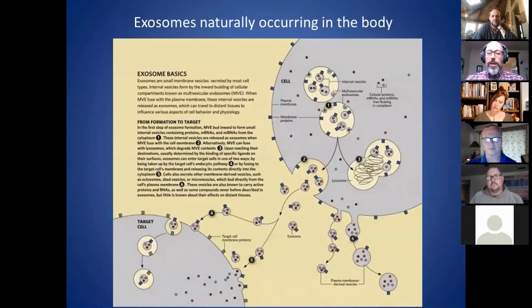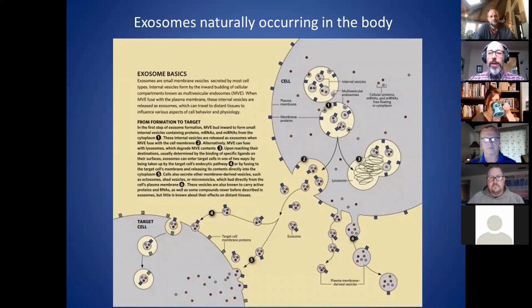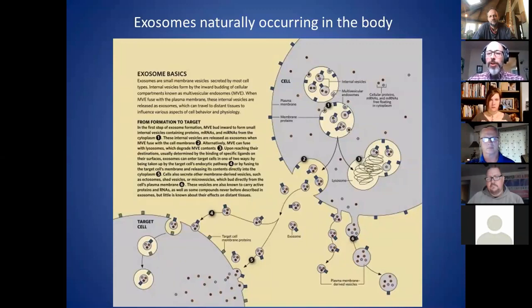Exosomes are something that is naturally occurring in the body. I have this diagram here, and if you look at the top right, you'll see a normal cell outlined, and inside the cell you have these vesicles. Inside our cells there are a number of different little organs called organelles, and they're generally contained by a membrane. They come in different shapes, but lots of them are spherical blobs with the same lipid bilayer membrane as the outer membrane of the cell, and they can contain various types of chemicals.